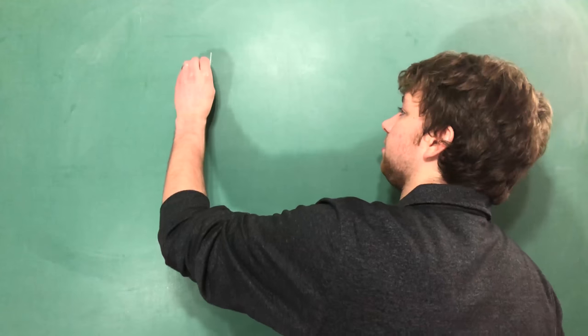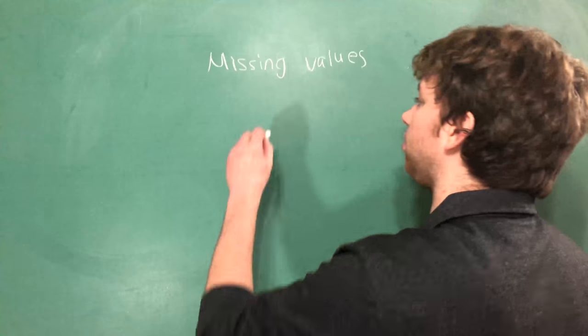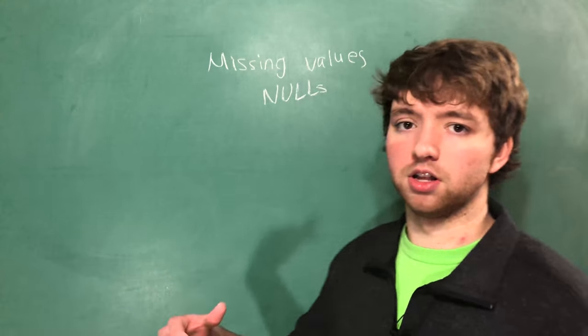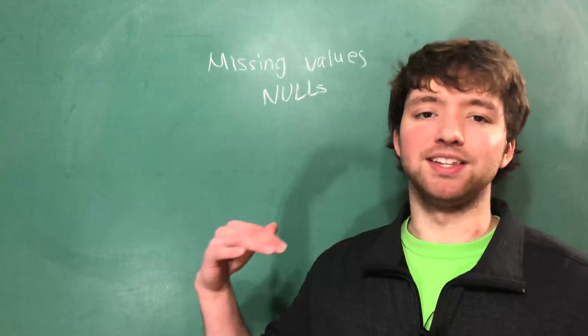We are going to be talking about missing values. Missing values are known as nulls. So when something is null, it is missing a value.